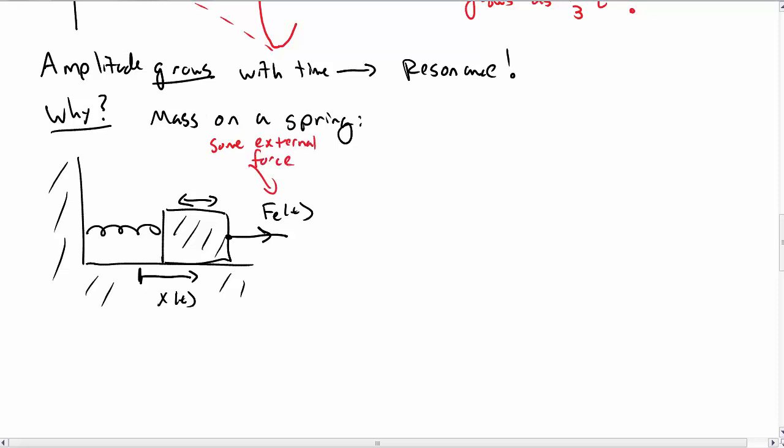So not just the spring, but then this extra external force. You can imagine there's some rod attached, and we're going to push and pull. So the mass is going to oscillate back and forth, and it's pulled and pushed by the external force.